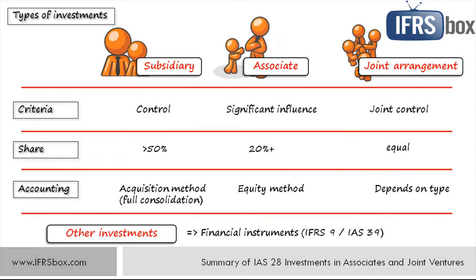We have already seen this screen in one of our earlier videos with the introduction to group accounts. Here is the summary of all kinds of investments that an investor can make. An investor can put her money into a subsidiary if she gains control, evidenced by more than 50% share in most cases but not necessarily, and applies the full consolidation method. An investor may also invest in an associate where significant influence is present, or in a joint arrangement — a joint venture or joint operation — where joint control is the basic criteria, or in any other investment treated as a financial instrument.